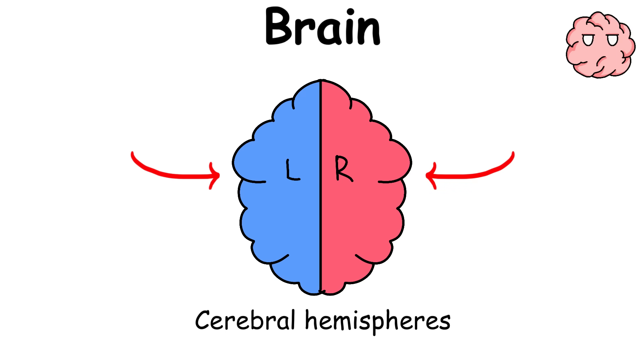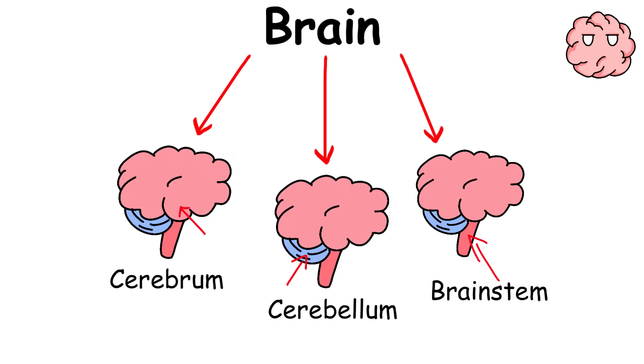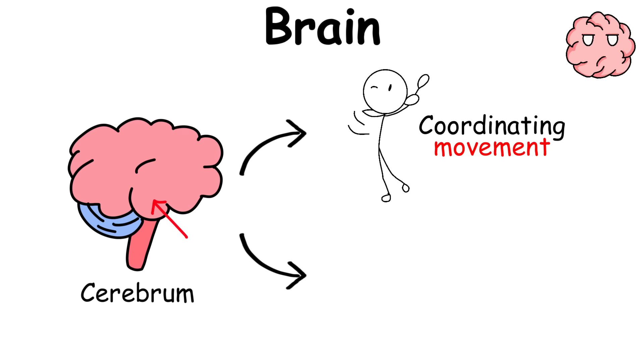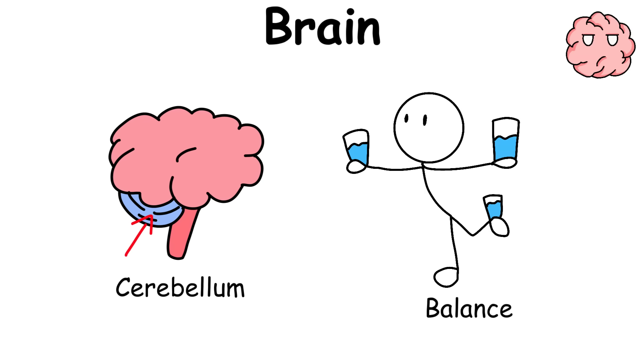It has three main parts: the cerebrum, the cerebellum, and the brainstem. As the largest part of the brain, the cerebrum is responsible for coordinating movement and regulating temperature. The cerebellum helps with balance, and the brainstem controls the basic functions of life.